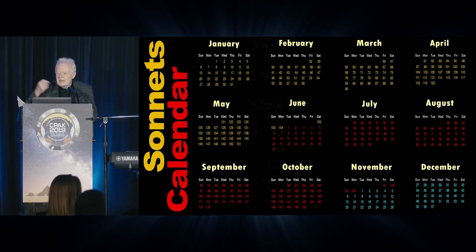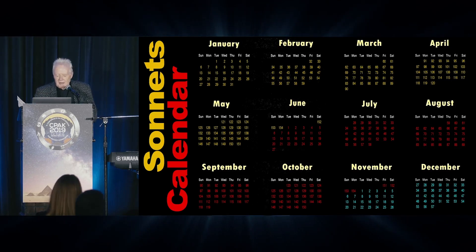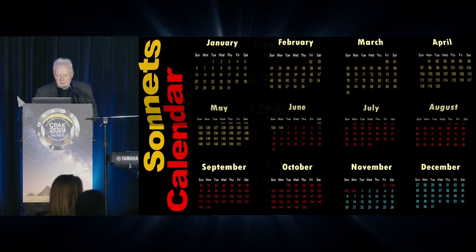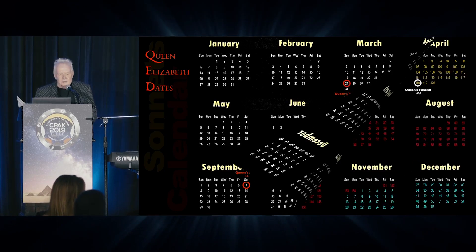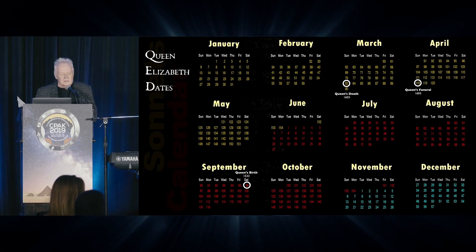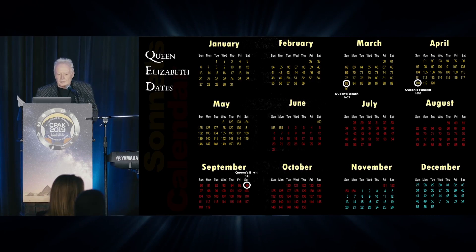If there's something that happens on a certain date that he wants to reference, he can write something in that particular sonnet, because each date has a unique sonnet number to it. For instance, the queen's birth, the queen's death, the queen's funeral — these would be important to him. And you look at the sonnets that underlie those dates, read them from that perspective, and all of a sudden it makes sense.